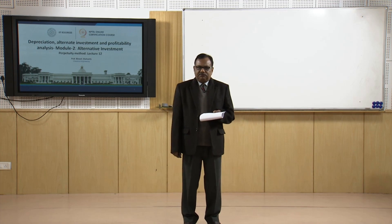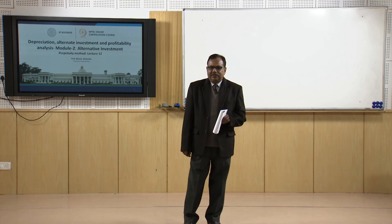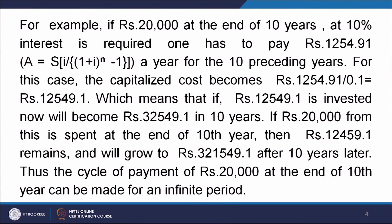And if 20,000 from this is spent at the end of the 10th year, then rupees 12549.1 will remain and will again grow to rupees 32549 after 10 more years. Thus, the cycle of payment of rupees 20,000 at the end of the 10th year can be made for an infinite period.